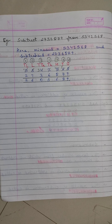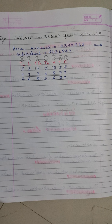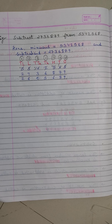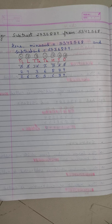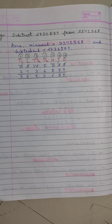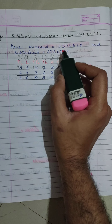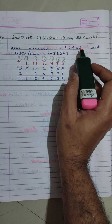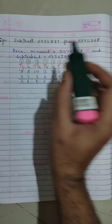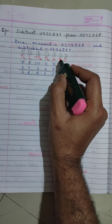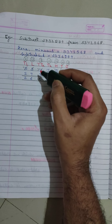Moving on to the example of subtraction: subtract 2,73,68,79 from 5,45,34,25,68. First, we have to identify which is the minuend and which is the subtrahend. The greater number will be the minuend and the smaller number will be the subtrahend. We can clearly see that 5,45,34,25,68 is the minuend and 2,73,68,79 is the subtrahend. We will make the place value columns and arrange both numbers accordingly.